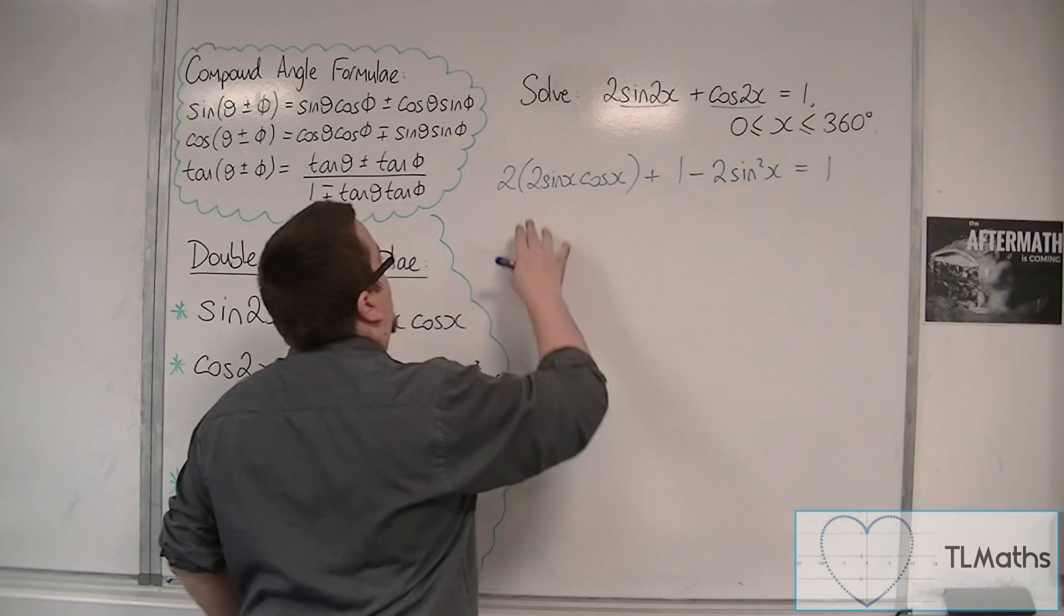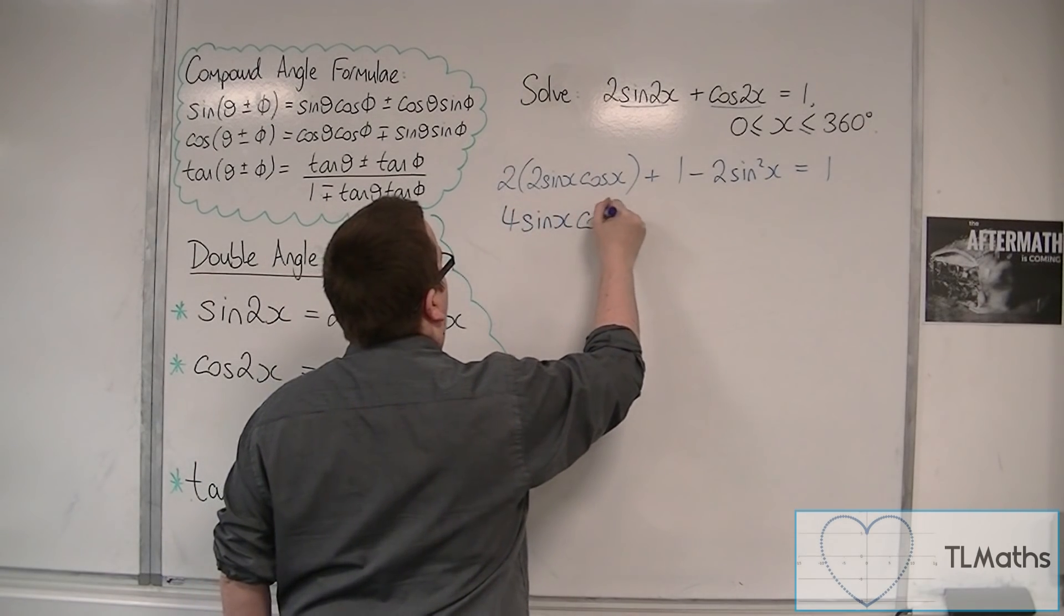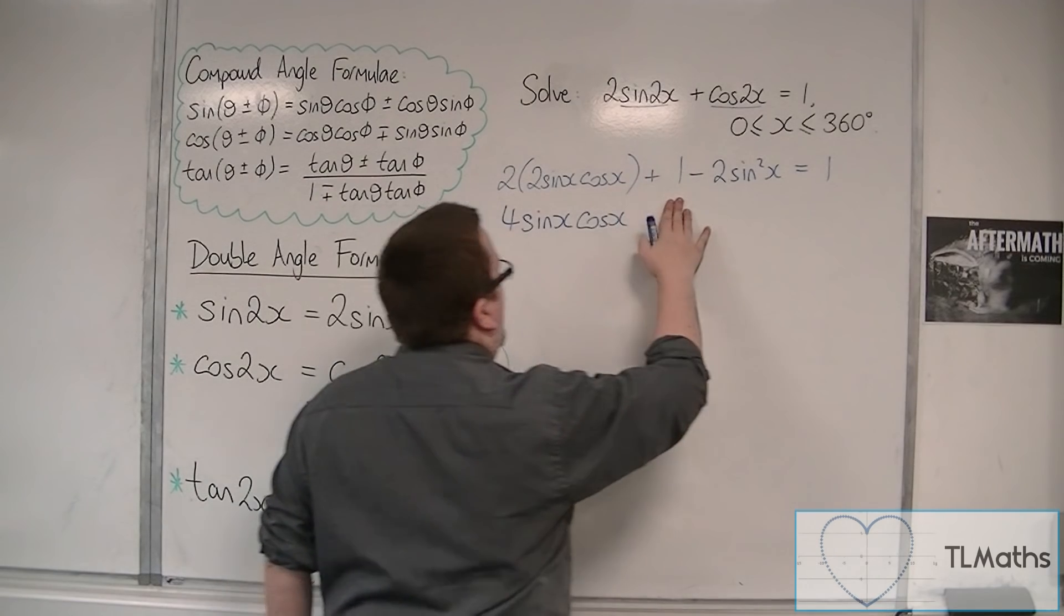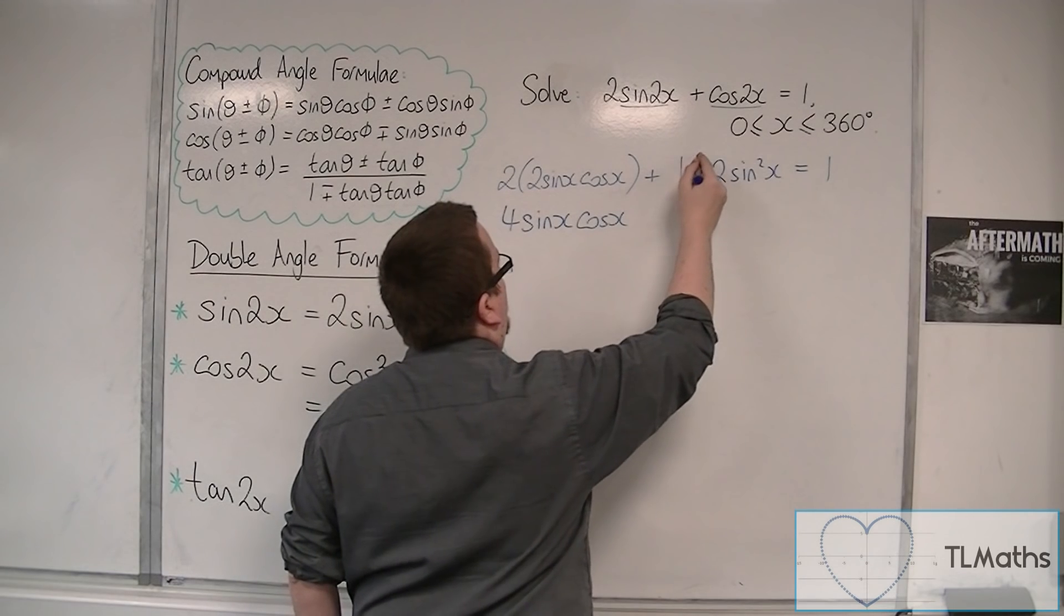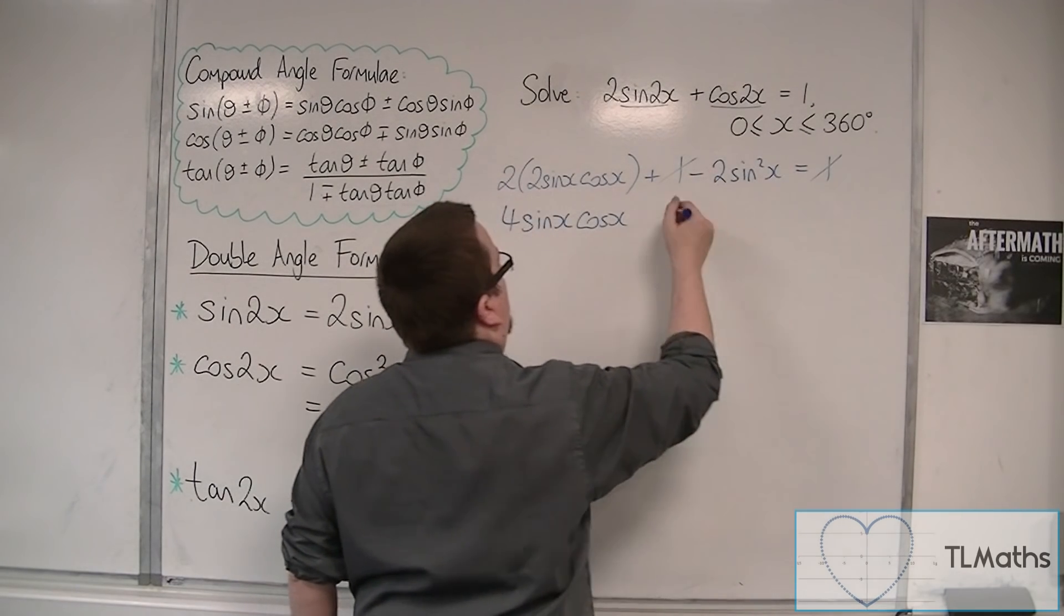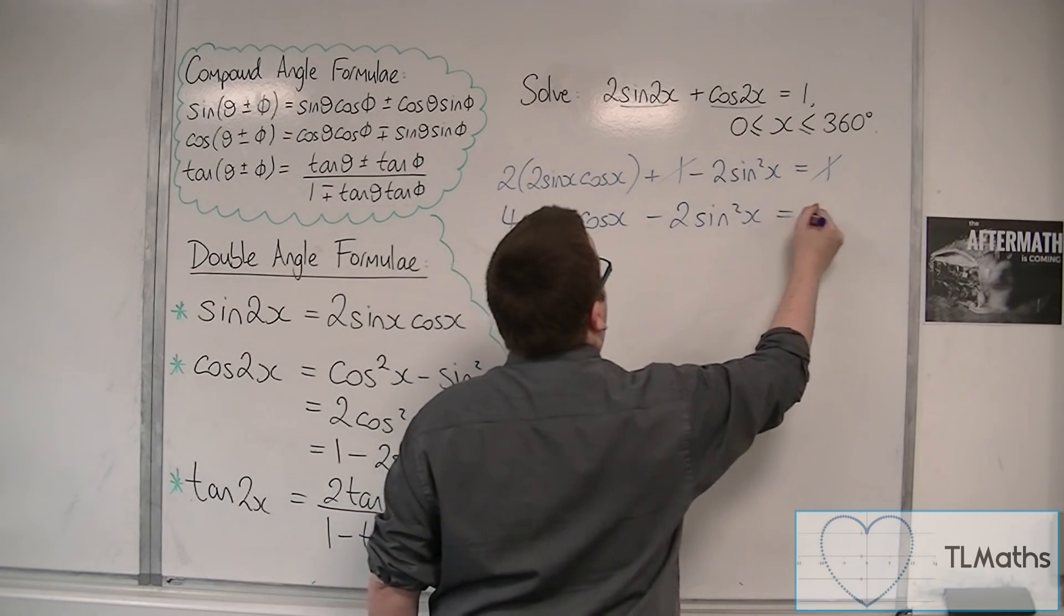So, let's simplify this. We have 4sin(x)cos(x). We've got 1 here and a 1 there. So, we can take 1 from both sides, so they can cancel each other out. And so, I'm going to be left with -2sin²(x) = 0.